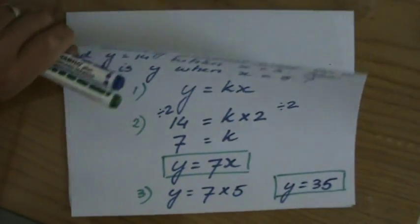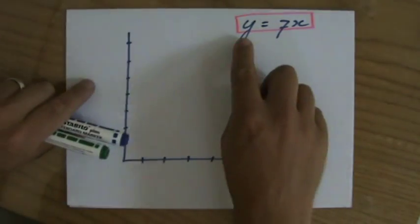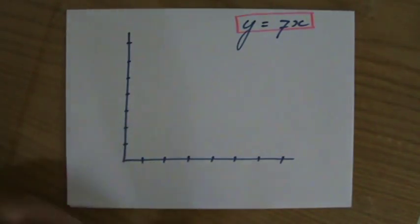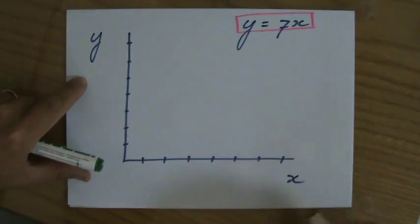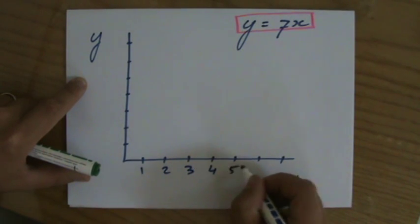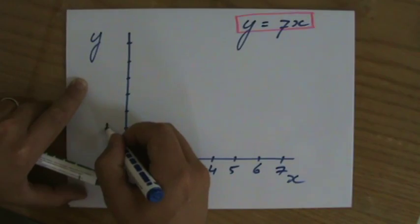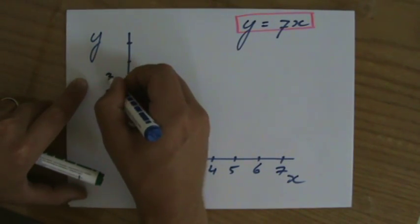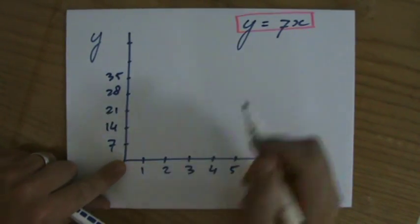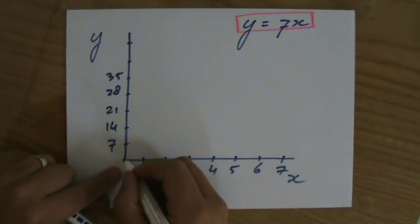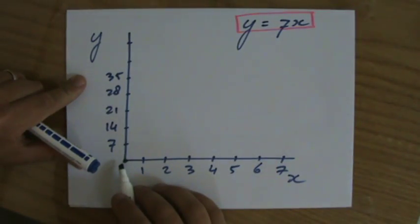Just for your understanding, I drew some axes here. Y equals 7x, that was the equation we found. I want to graph it. Y vertically, x 1, 2, 3, 4, 5, 6, 7. Let's do this in steps of 7: 7, 14, 21, 28, 35. When x is 0, y is 0. A direct proportion linear equation is a line through the origin.